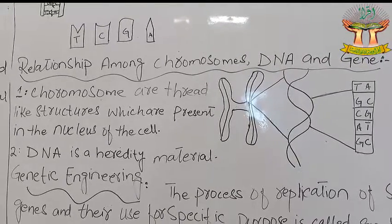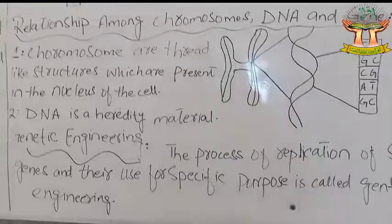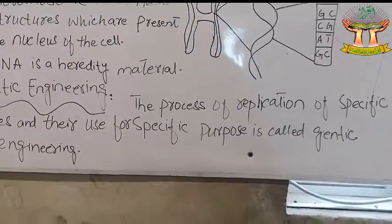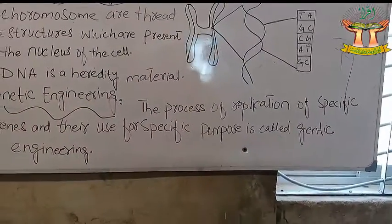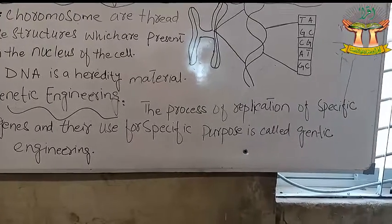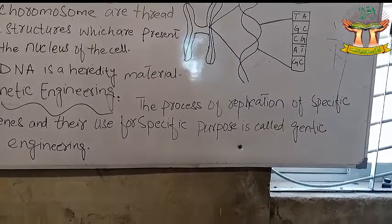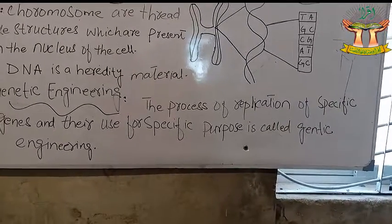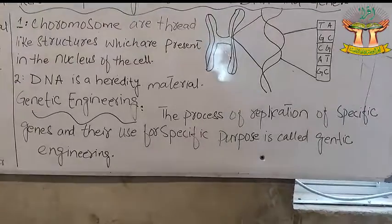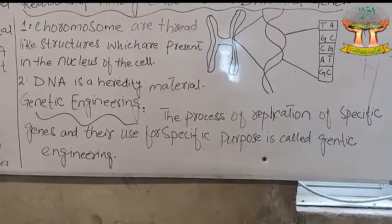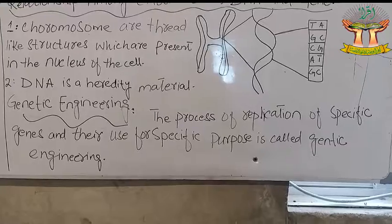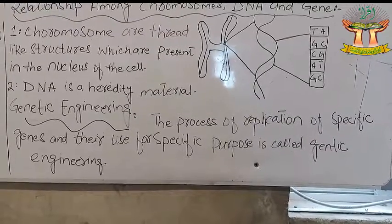Our next topic is genetic engineering. The process of isolation of specific genes and their use for a specific purpose is called genetic engineering. Using this method, genes that make useful proteins are introduced into bacteria, and bacteria are used to prepare these products.